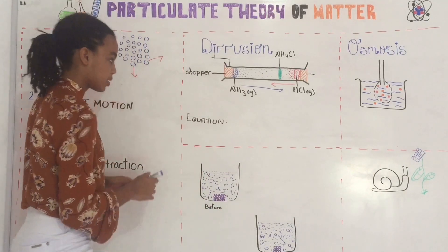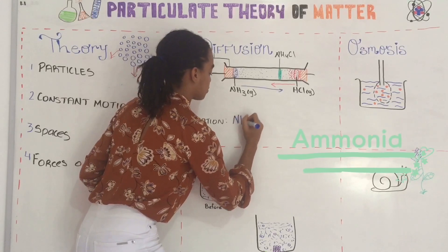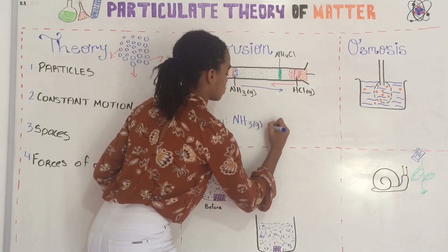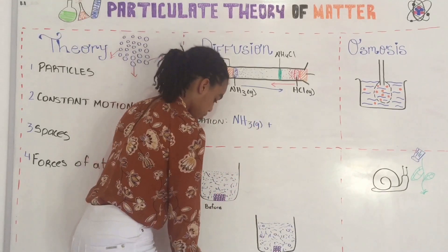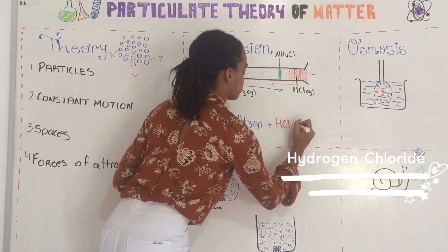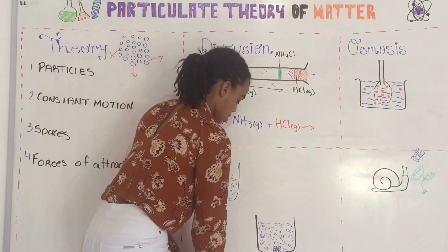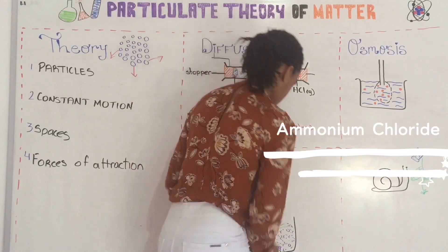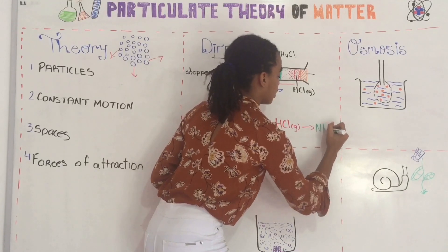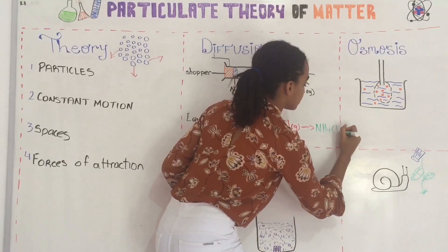So we can write an equation for this experiment. We can say: ammonia, which is NH3, plus hydrogen chloride, gives ammonium chloride, NH4Cl, and this is a solid.